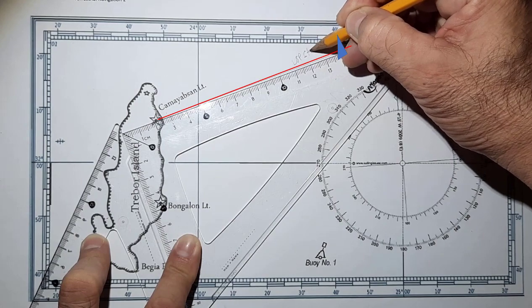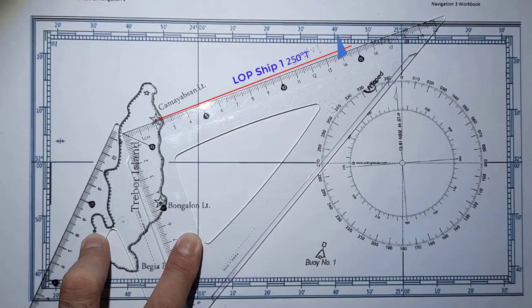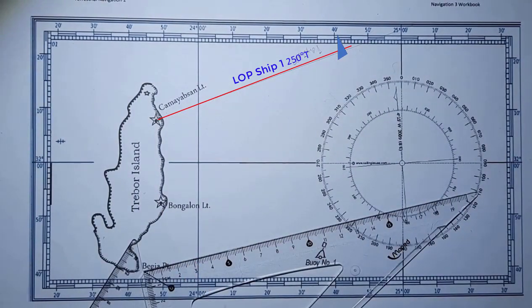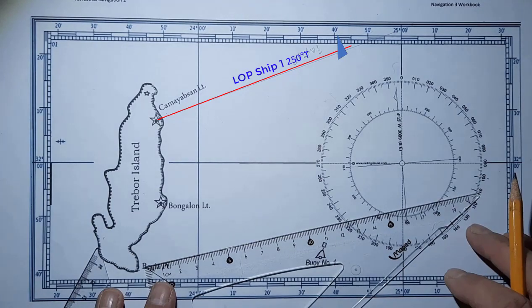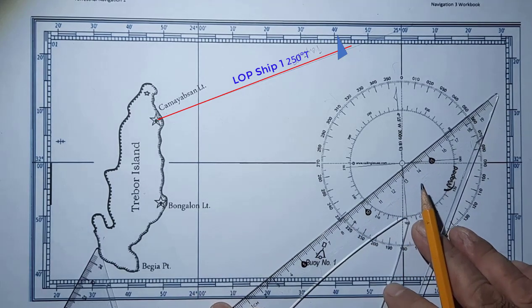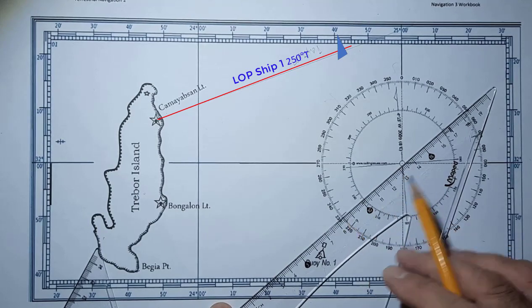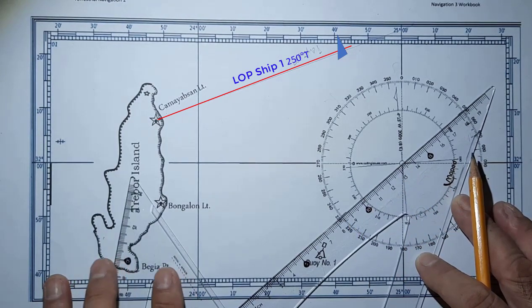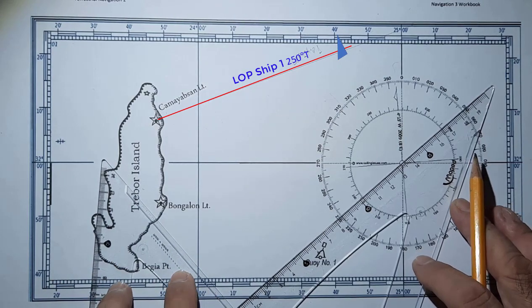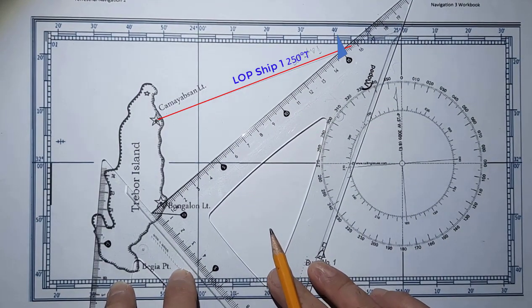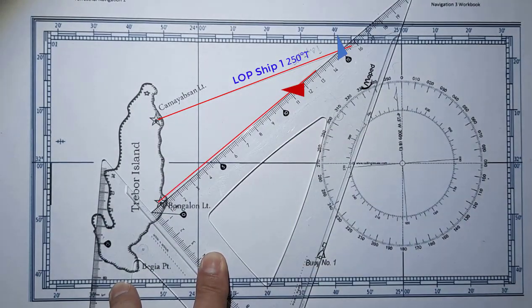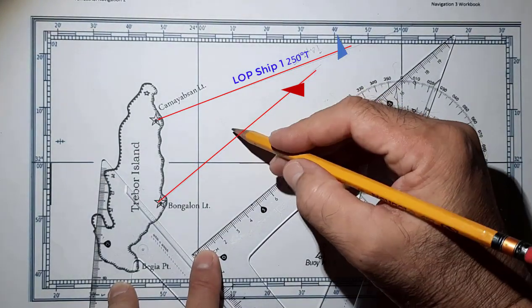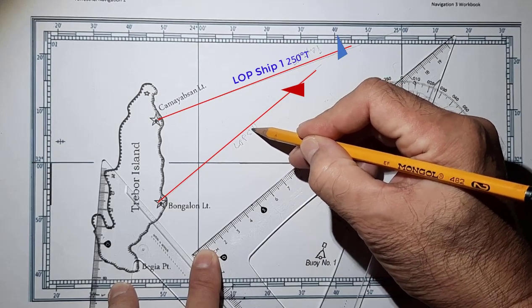That's LOP of Ship 1. LOP of Ship 2 references Bungalun Lighthouse. From the ship, it is 230 degrees true — the bearing of Bungalun from the ship is 230. Using the center of the compass rose, the same side, arrange the other triangle to hold. Run your triangle to Bungalun Light, then draw the line. Your ship is somewhere on this line. This is LOP Ship 2.